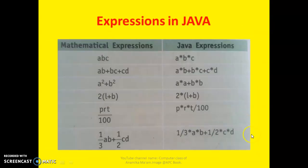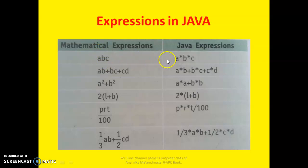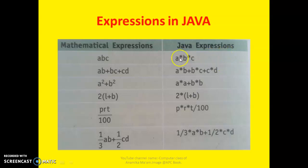Now let's look at some expressions in Java. Suppose this is our mathematical expression — you write it in mathematics like A·C·C or similar. But in Java, you have to write it differently. The multiplication sign is not written like a cross sign; it is written like an asterisk sign. So A into C into C uses an asterisk.